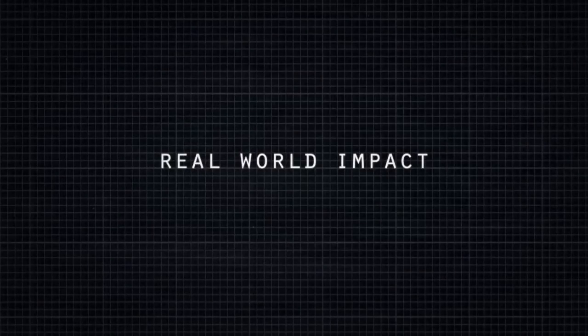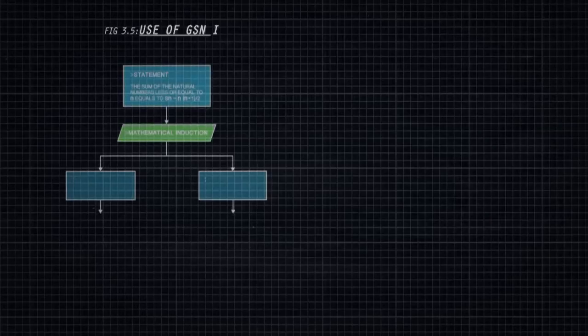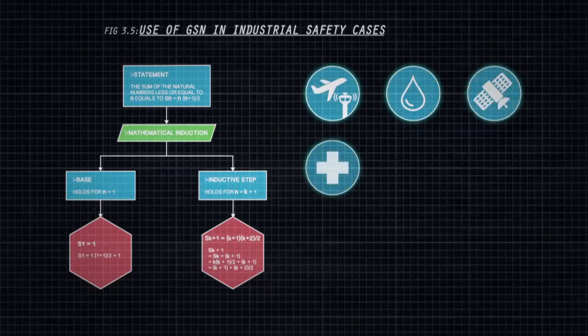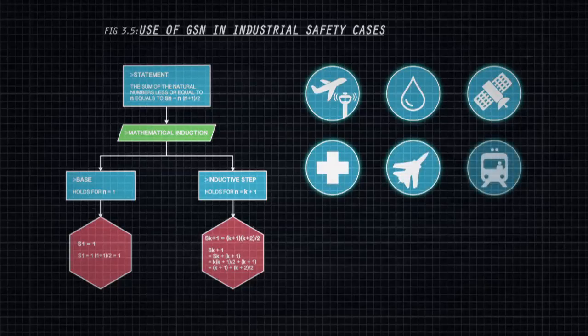York's work on GSN has provided industry with a new approach and method to presenting safety arguments. There has been wide adoption and use of GSN in industrial safety cases in many domains, including air traffic management, offshore oil and gas, space systems, medical systems, military aerospace, defence, and the railway and automotive industries. The key benefit experienced by companies adopting GSN is that it improves the comprehension of the safety argument amongst all of the key project stakeholders, such as system developers, safety engineers, independent assessors, and certification authorities.